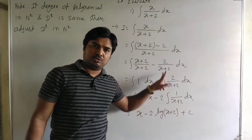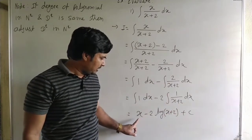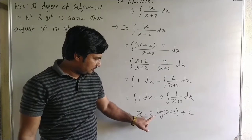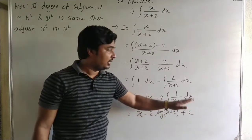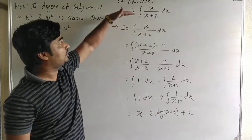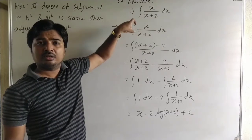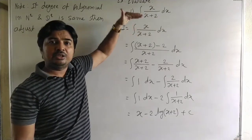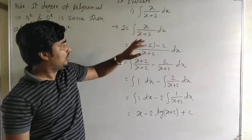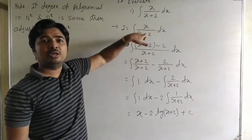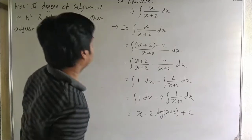So the answer is x minus 2 into log of x plus 2 plus C. Here log of x plus 2, we take modulus or bracket. The final answer is x minus 2 log|x plus 2| plus C. In this problem there is division of two terms, but since degree of numerator and denominator is same, we adjust the denominator in the numerator.